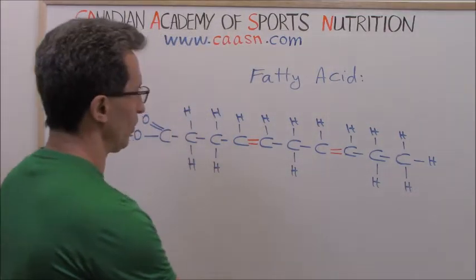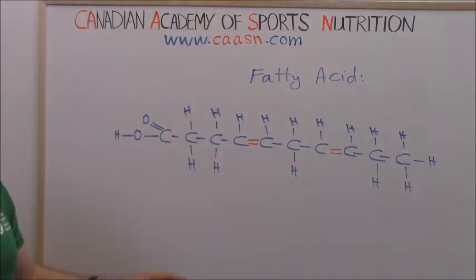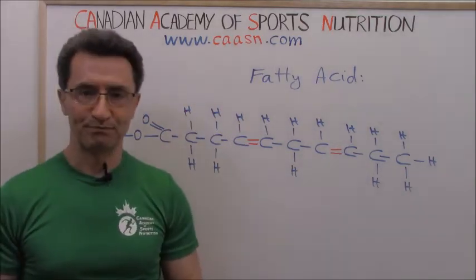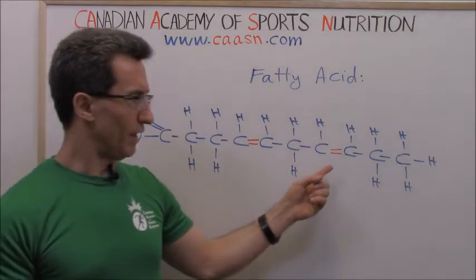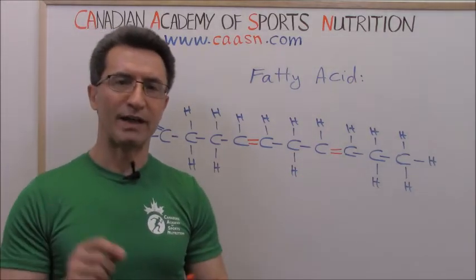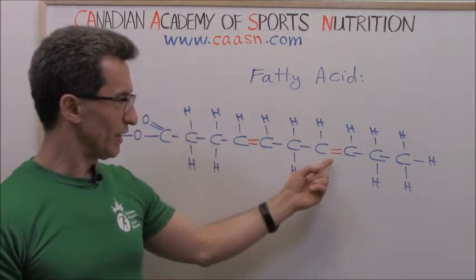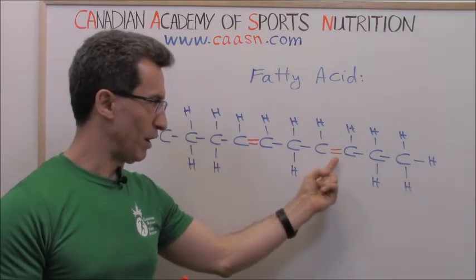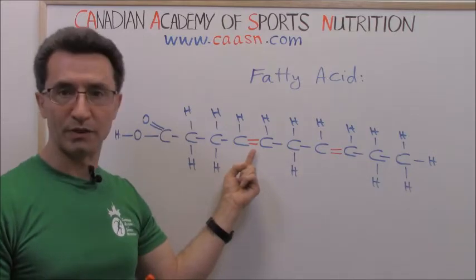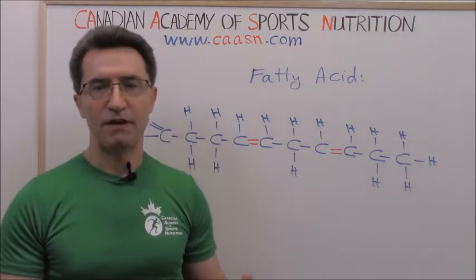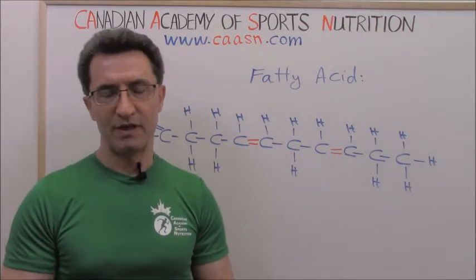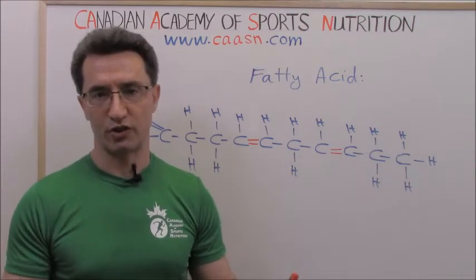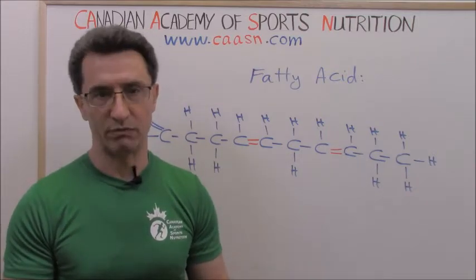I have put on the whiteboard here the chemical structure of a fatty acid. Every carbon atom has four bonds — those are the red ones I've highlighted. We have two double bonds here. Remember, if a fatty acid doesn't have any double bond in its structure, we call them saturated, like water.